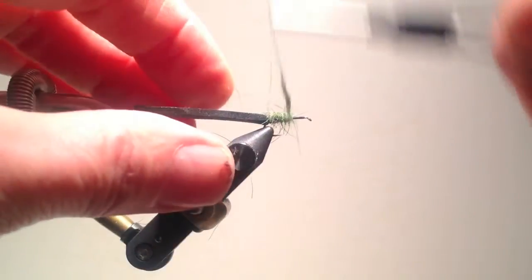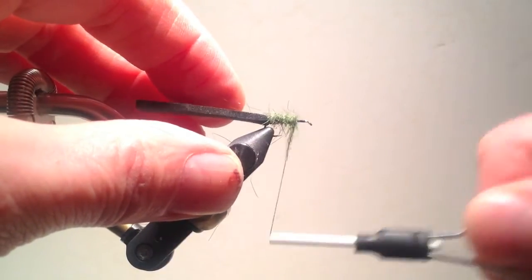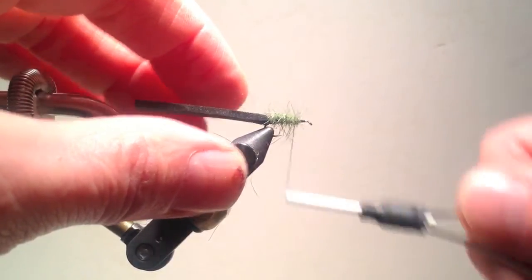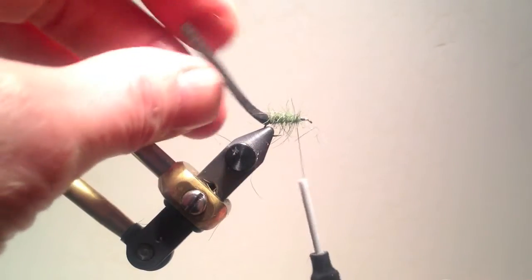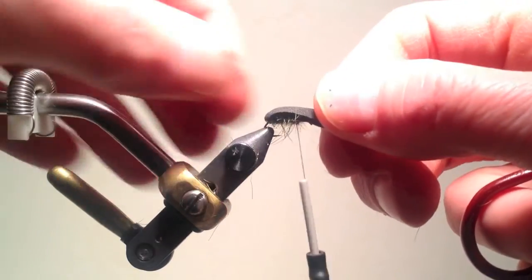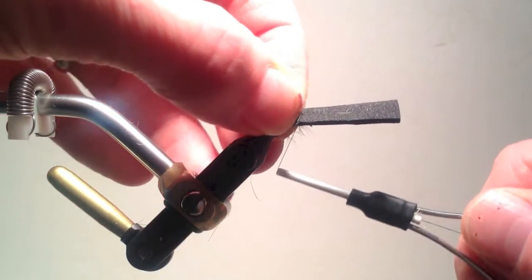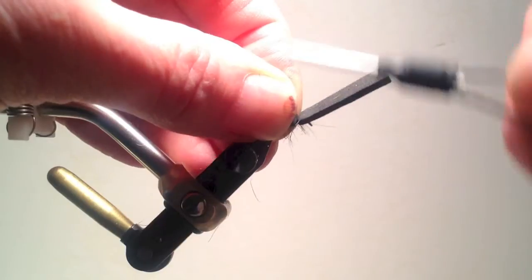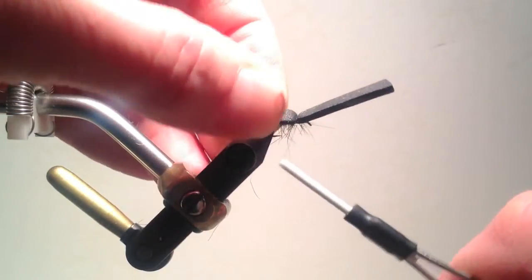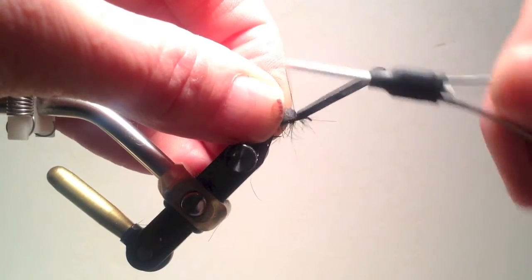Add additional dubbing as necessary to extend the body closer to the eye of the hook. I usually leave approximately two eye lengths. And then fold the foam forward and bind down tightly, being sure to keep the foam at the top of the hook. Don't let it slide to the far side of the hook.